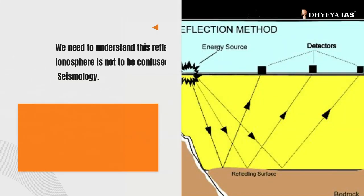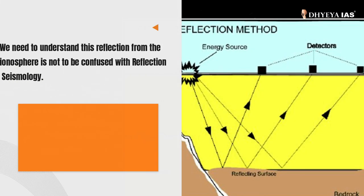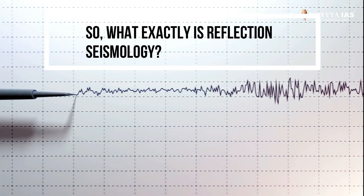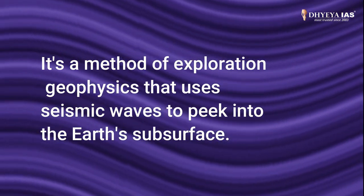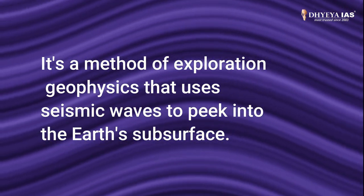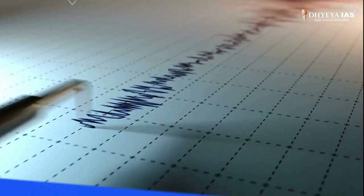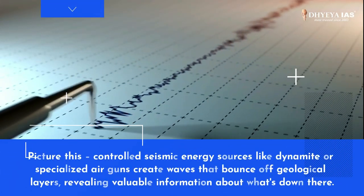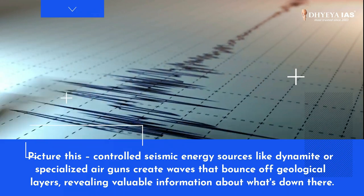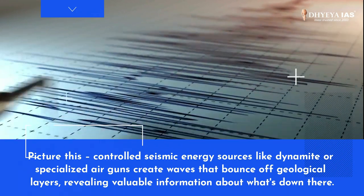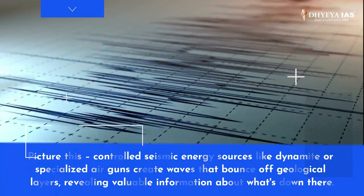We need to understand that reflection from the ionosphere is not to be confused with reflection seismology. So what exactly is reflection seismology? It's a method of exploration geophysics that uses seismic waves to peek into the Earth's subsurface. Controlled seismic energy sources like dynamite or specialized air guns create waves that bounce off geological layers, revealing valuable information about what's down there.